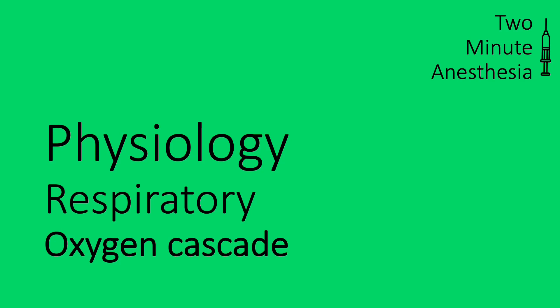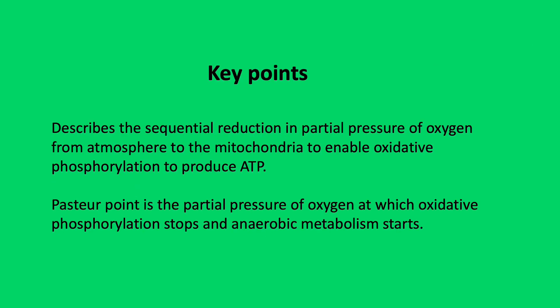Today's analysis is the oxygen cascade. Here are two key definitions. The oxygen cascade describes a sequential reduction in partial pressure of oxygen from the atmosphere to the mitochondria to enable oxidative phosphorylation to produce ATP. The Pasteur point is the partial pressure of oxygen at which oxidative phosphorylation stops and anaerobic metabolism starts.